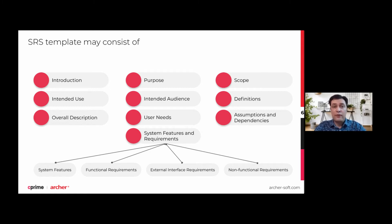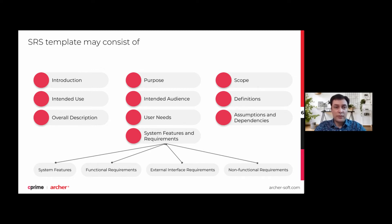As promised, here is a possible hierarchical structure of the document. It starts with the introduction, then the purpose part, which may consist of: defining the project's scope, describing the value it will deliver, showing who will use the software, and detailing how it will help intended users' jobs. Then we have scope, intended use, intended audience, definitions, overall description, user needs, assumptions and dependencies, and of course system features and requirements. For features and requirements, it could include system features, functional requirements, external interface requirements, and non-functional requirements.